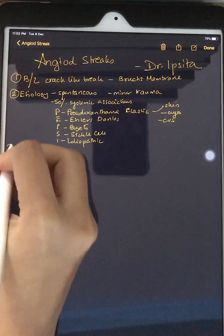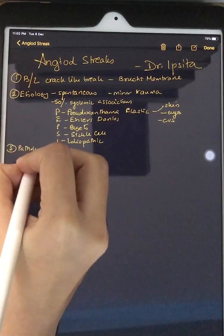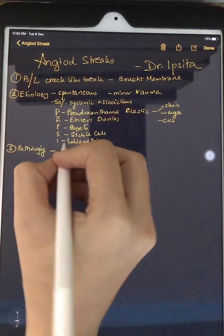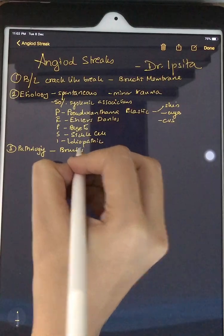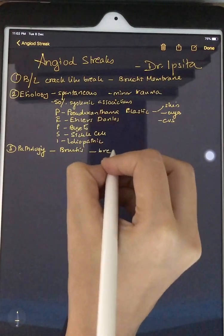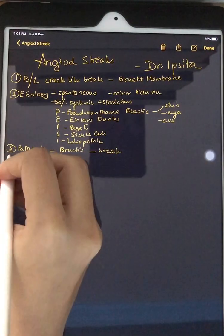So what is the pathology? The pathology lies in the fact that the Bruch's membrane becomes thickened, brittle, and calcified, which leads to breaks. These breaks are known as angioid streaks.